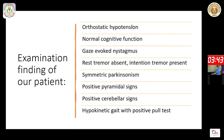Going back to our patient, what we find on examination: there is orthostatic hypotension, which is a feature of autonomic involvement. Cognitive function is normal. There is gait-evoked nystagmus and intention tremor, suggestive of cerebellar involvement. There is symmetric Parkinsonism, positive pyramidal signs, and hypokinetic gait with a positive pull test.